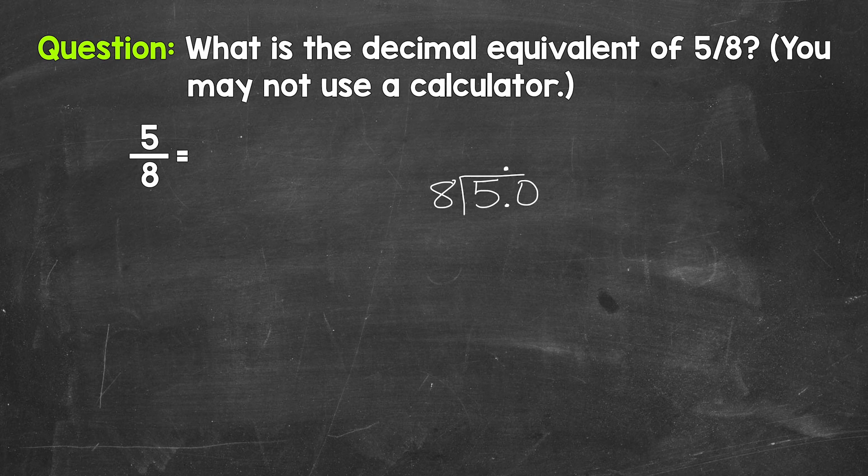And now we can think of this as 50 divided by eight. Although this is still technically five here, we have 5.0, which still equals five. We're not changing the value of anything here. We're just using that placeholder zero in the tenths place in order to work through the division process. So how many whole groups of eight in 50?